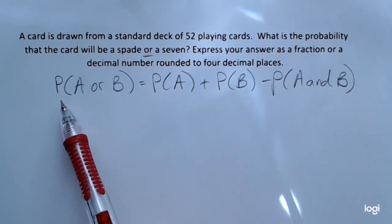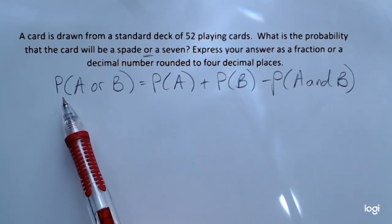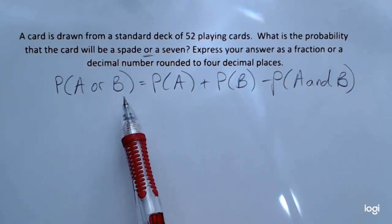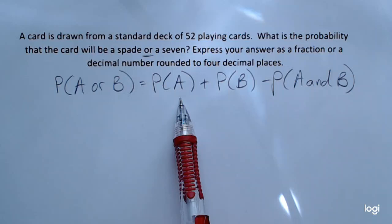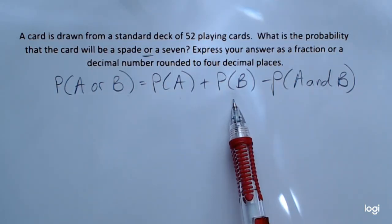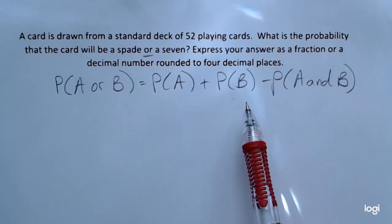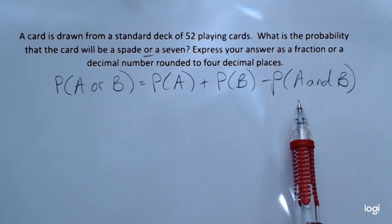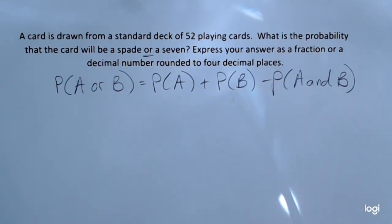The formula for the addition rule for probability is: the probability of event A or B equals the probability of event A plus the probability of event B. And if they are not mutually exclusive, then we have to subtract out the probability of A and B occurring together.